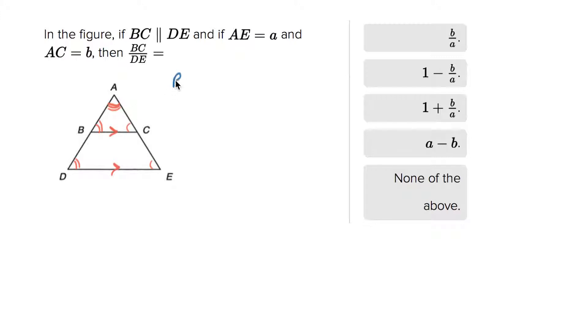So the ratio of BC, which is right here, to DE should be equal to AC over AE.